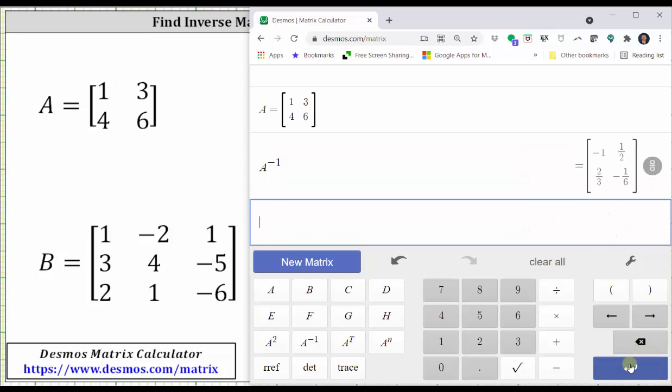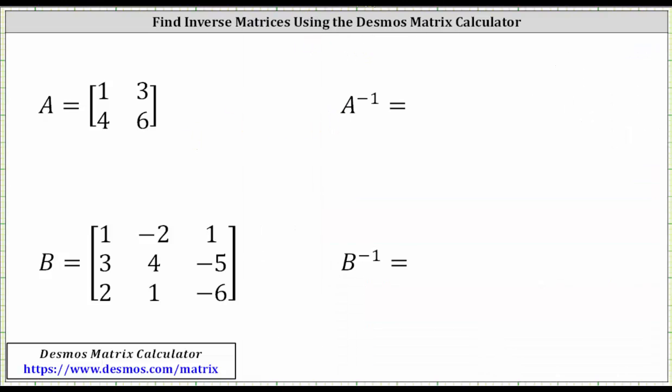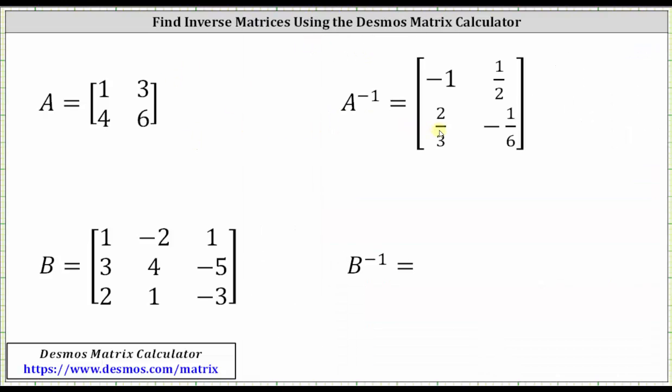Let's go ahead and press enter. To verify the inverse matrix, let's find the product of matrix A and A inverse. We know we should get the two by two identity matrix. So we have A times A inverse, enter. And we do get the two by two identity matrix. Let's go ahead and record the matrix A inverse, which I have here on the right.